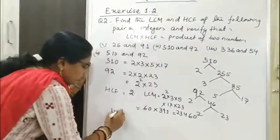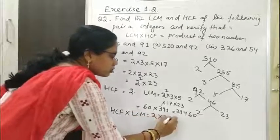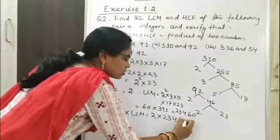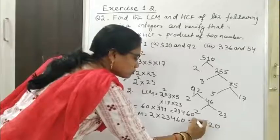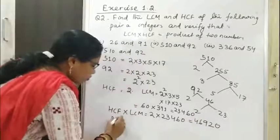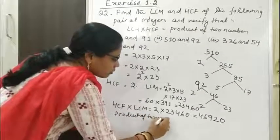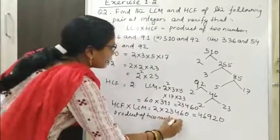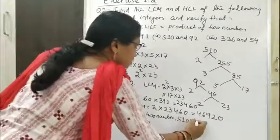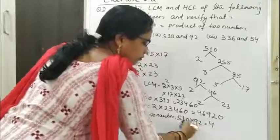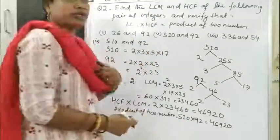So HCF × LCM = 2 × 23,460 = 46,920. And the product of the two numbers: 510 × 92 = 46,920. So it is verified.